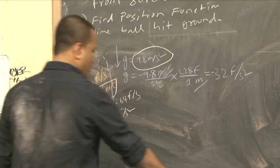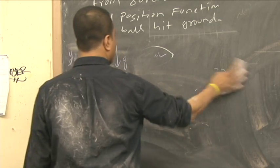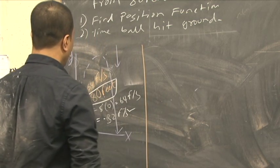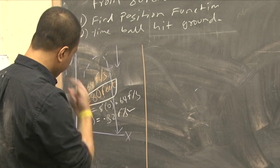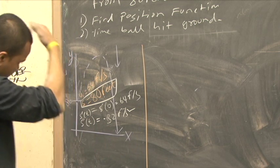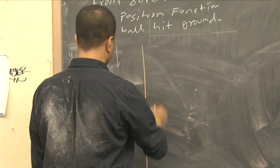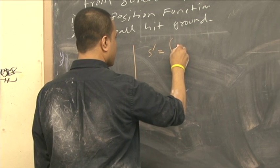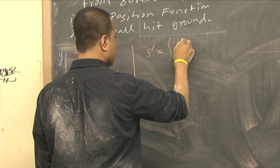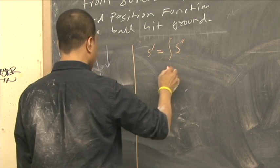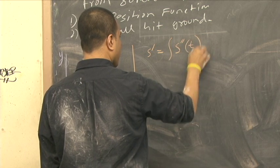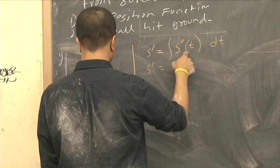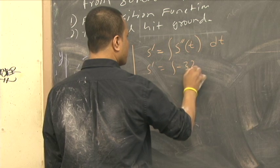Now we're going to do a little bit of calculus to solve this problem. I guess we can do that. The velocity is the integral of acceleration, which is negative 32 dt.